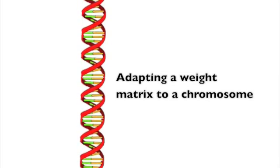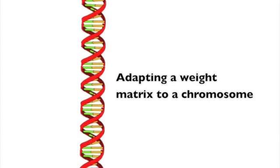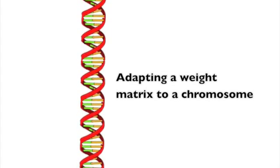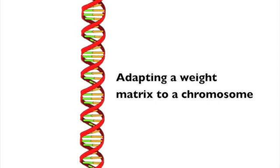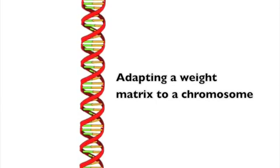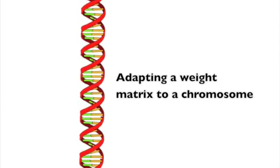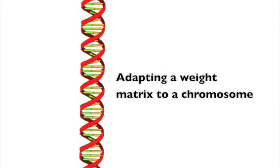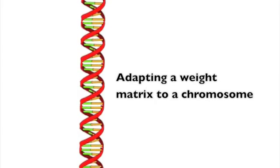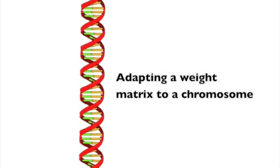There will be one weight matrix for the connection between every single layer. So if you have three layers there will be two weight matrices for the connections between each of these two layers. This basically transforms the neural network into a long stream of numbers. This is ideally suited to a chromosome and all neural networks of the same configuration will have the same length, which is also a requirement for using the genetic algorithm.